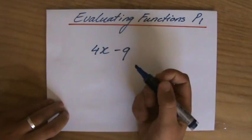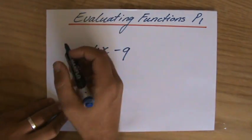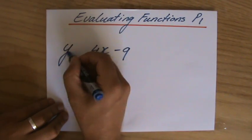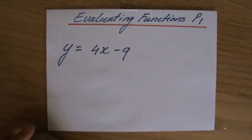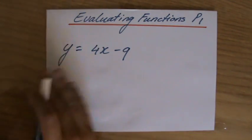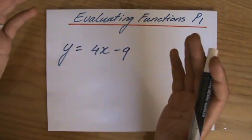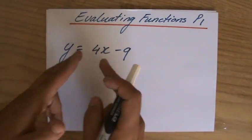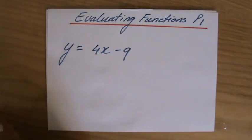Now, the function notation. Perhaps you've been used to so far seeing y equals 4x minus 9, which now becomes an equation which shows the relationship between an x-coordinate and a y-coordinate of this linear function.